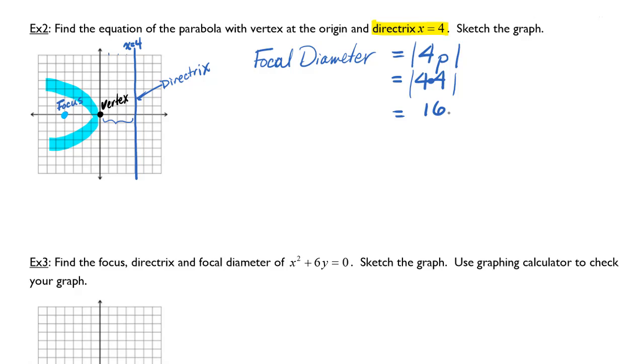That means that the focal diameter is 16. If I want to count how far vertically that will move, I will break this up into 8 to the right of the focus or vertically away from the focus: 1, 2, 3, 4, 5, 6, 7, 8. So there's one edge of my parabola. And same in the other direction: 1, 2, 3, 4, 5, 6, 7, 8.